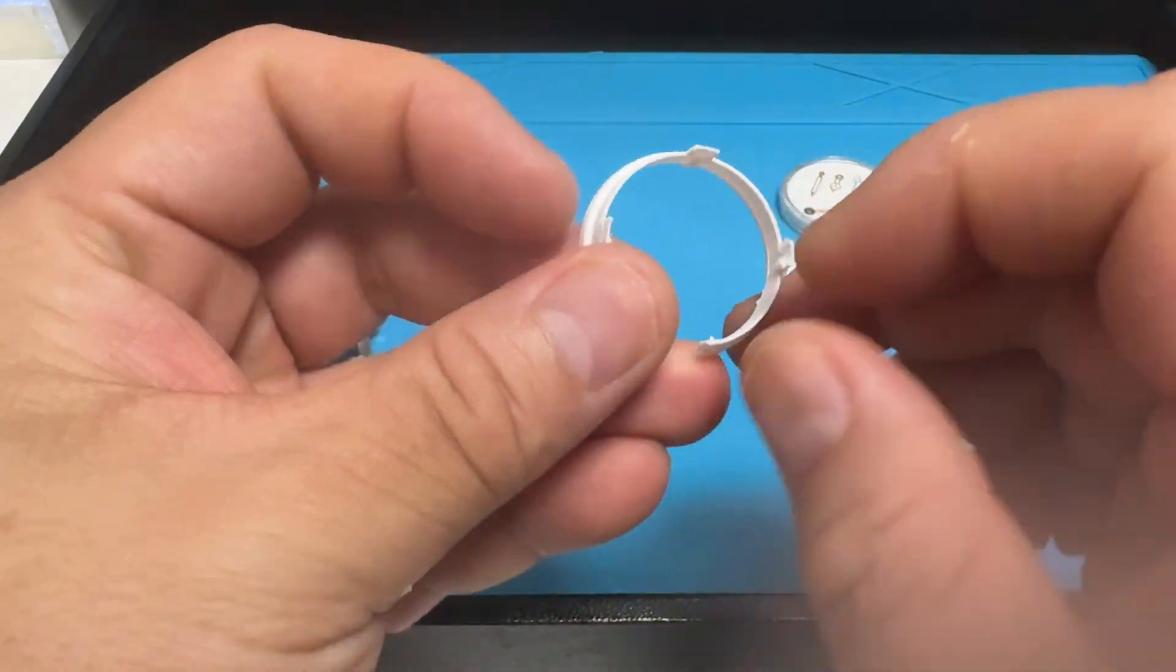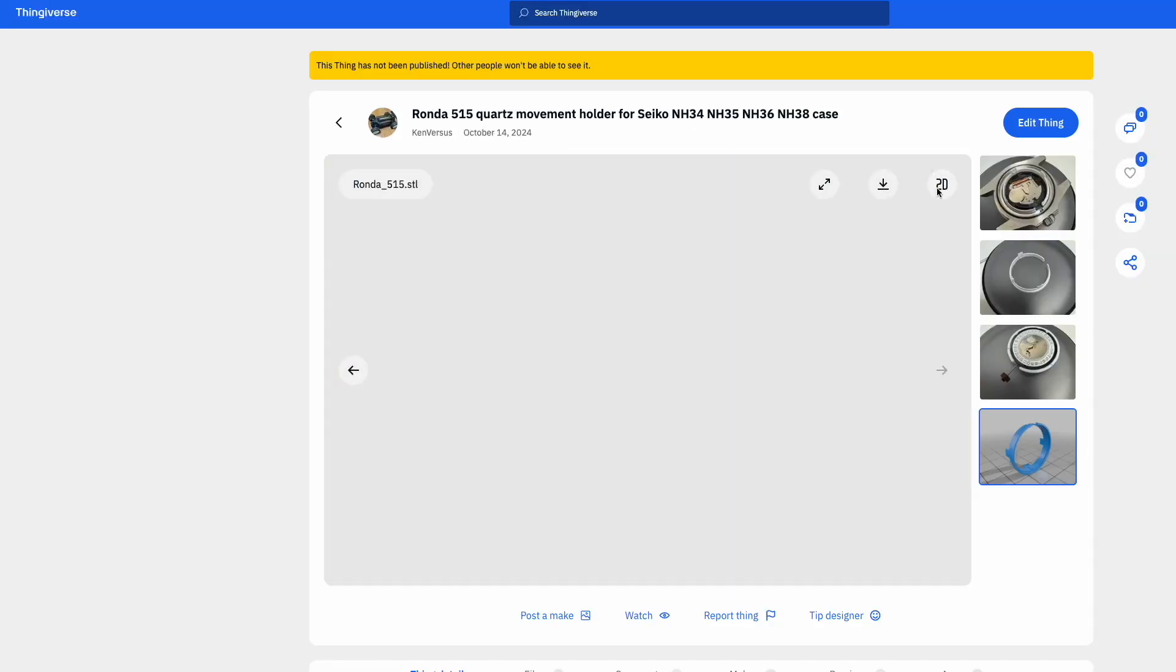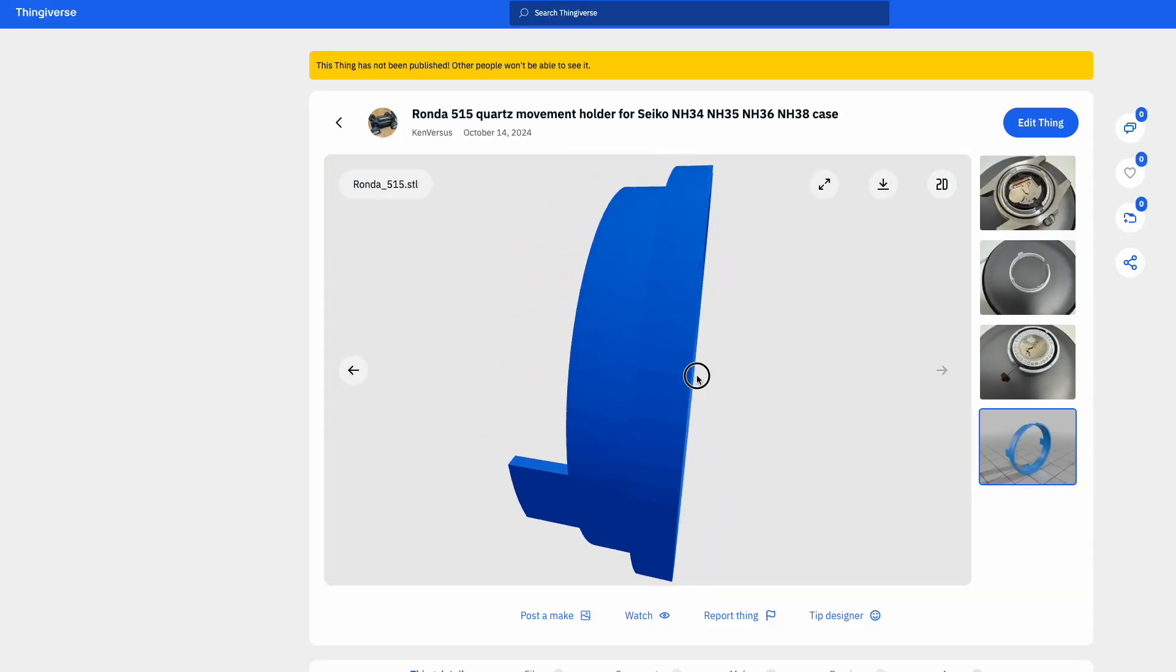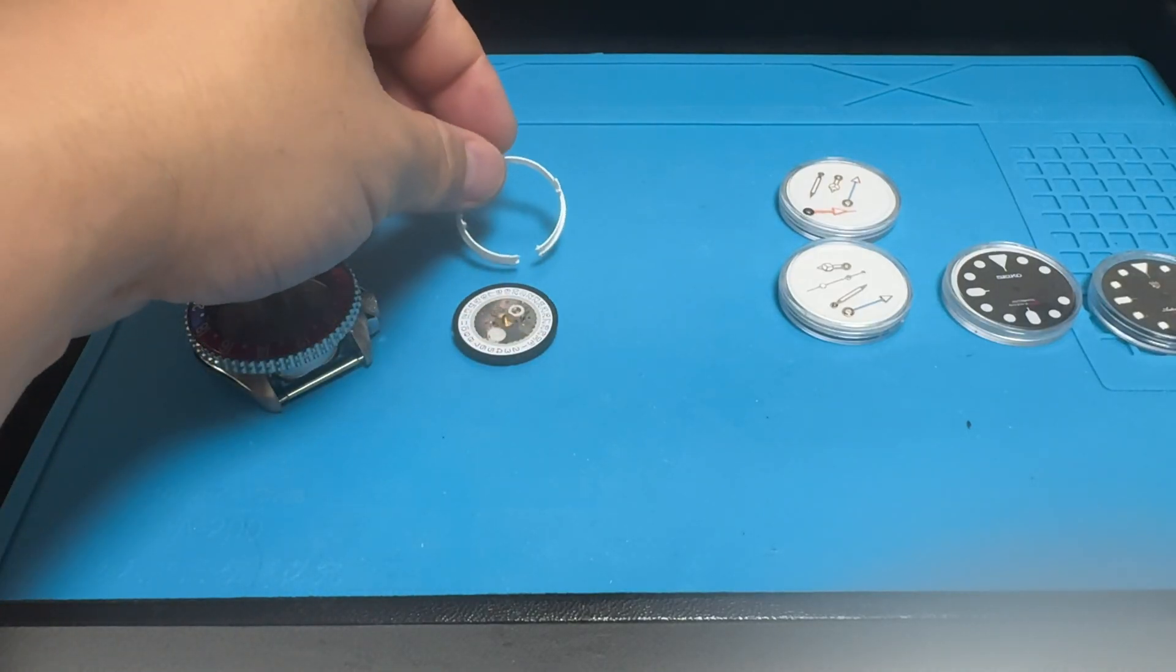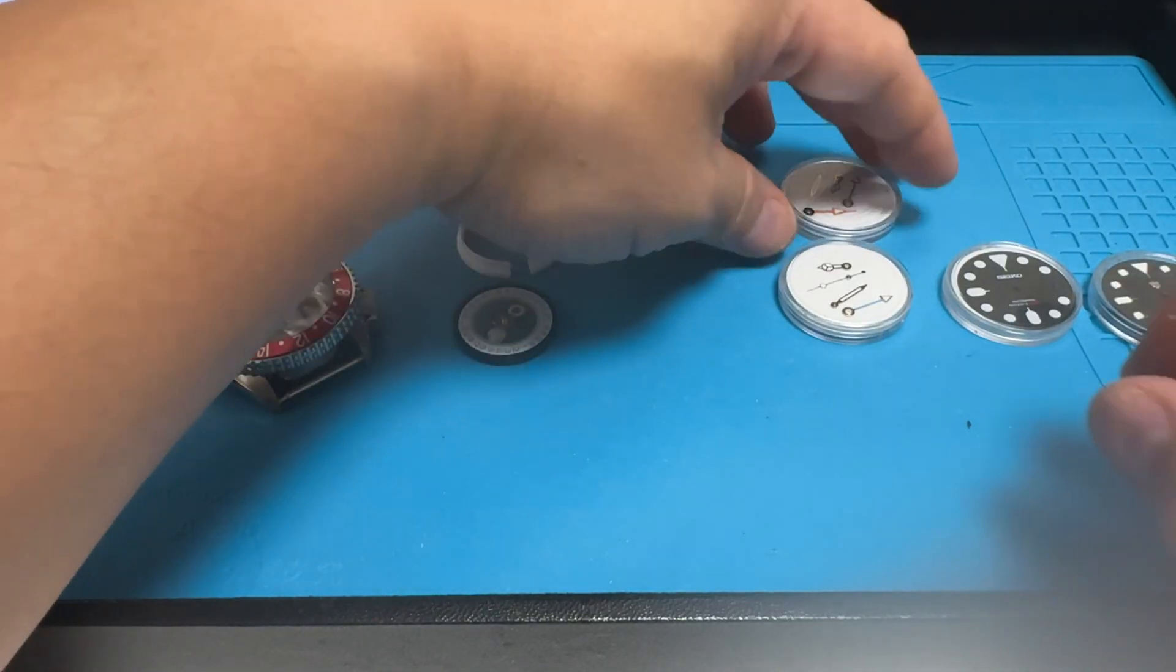Next we have the 3D printed movement holder. I'll leave a link to my 3D design in the description if you want to print some of your own for personal use. You can also buy some of these online on AliExpress if you don't have a 3D printer.